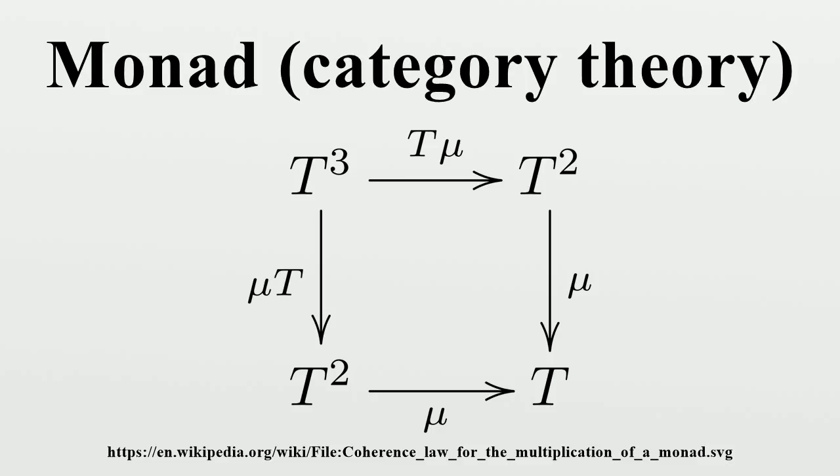In general, adjunctions are not equivalences; they relate categories of different natures. The monad theory matters as part of the effort to capture what it is that adjunctions preserve.